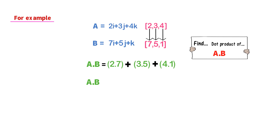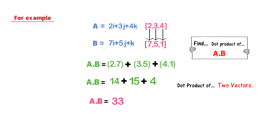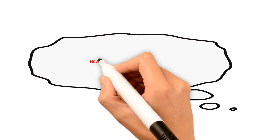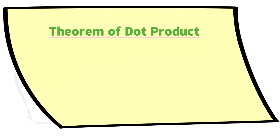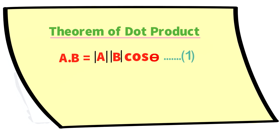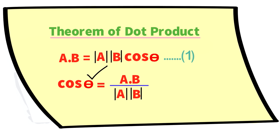That gives 14 + 15 + 4 = 33. The dot product of the two vectors gives the number 33. To find the angle between two vectors we use the theorem: the dot product of A and B equals the magnitude of A times the magnitude of B times cos θ. Rearranging: cos θ = (A·B) / (|A| × |B|), where θ is the angle between vector A and B.